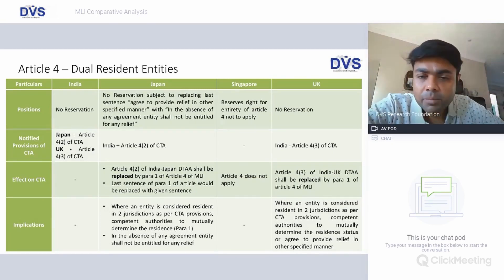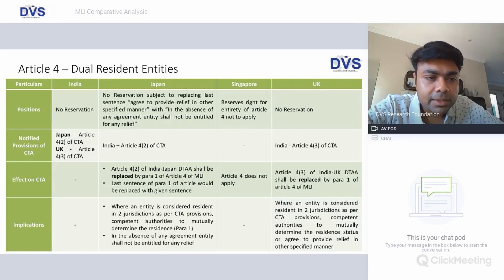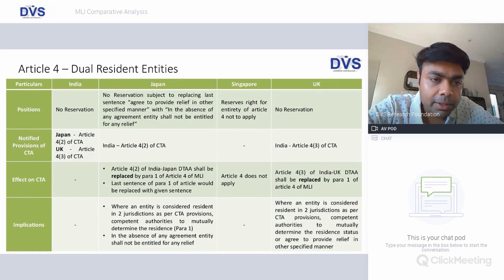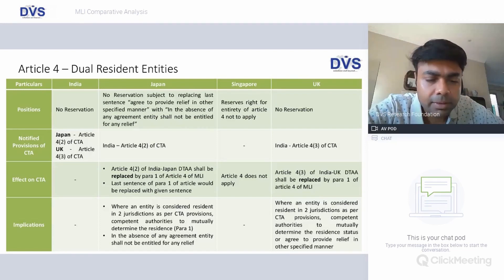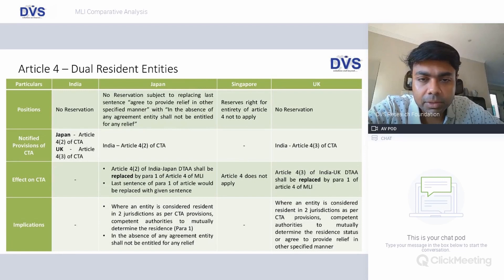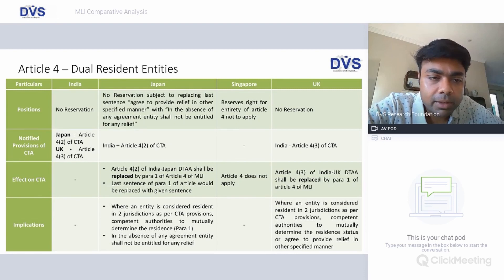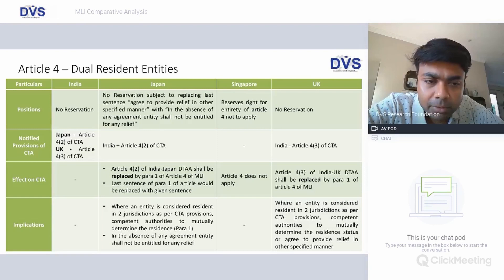Article 4 covers dual resident entities — this is where your POEM provisions come into picture. As far as India is concerned, India has no reservations, and India has notified Article 42 of the Japan DTA as part of its covered tax agreement with Japan. With Singapore, no notification has been made of that sort, and with UK, India has notified Article 43 of the covered tax agreement.